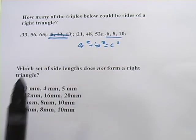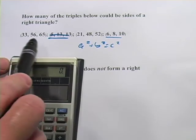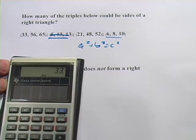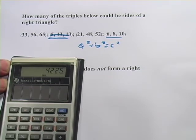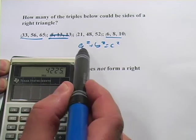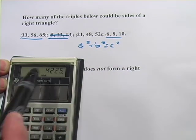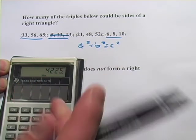And then these others might have to test. So I would probably grab a calculator and test them out. So for this 33, 56, 65, 33 squared plus 56 squared, that's 4,225. And what's 65 squared? 4,225. So that matches. Just using the Pythagorean theorem here, a squared plus b squared was 4,225 and c squared was 4,225.